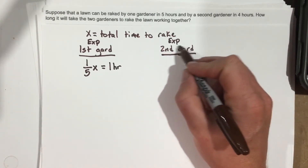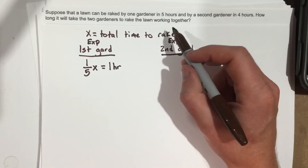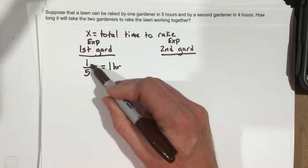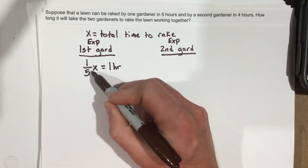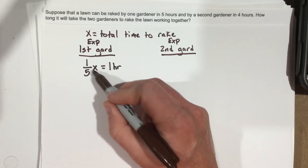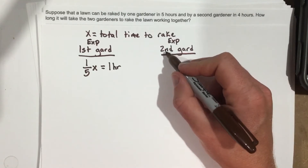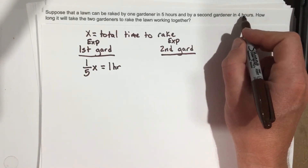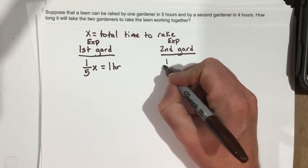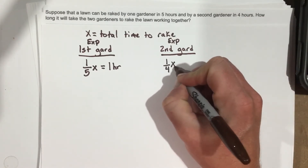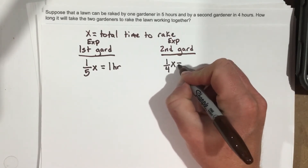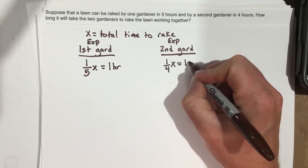For the second gardener, if you're doing a job in four hours, you're doing one-fourth of that job each hour. So one-fourth of the total time x is going to equal one hour.